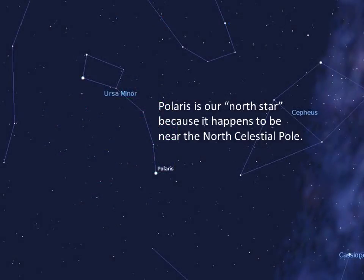There just happens to be a star that is really close to the North Celestial Pole — it's purely coincidental and lucky for us who live in the Northern Hemisphere. This star is our North Star; its official name is Polaris. There's a rumor that the North Star is the brightest star in the sky — it's not. Polaris is actually a normal looking star, bright enough to be found in light-polluted skies, but nothing exceptional. We'll come back to Polaris in the next lecture.